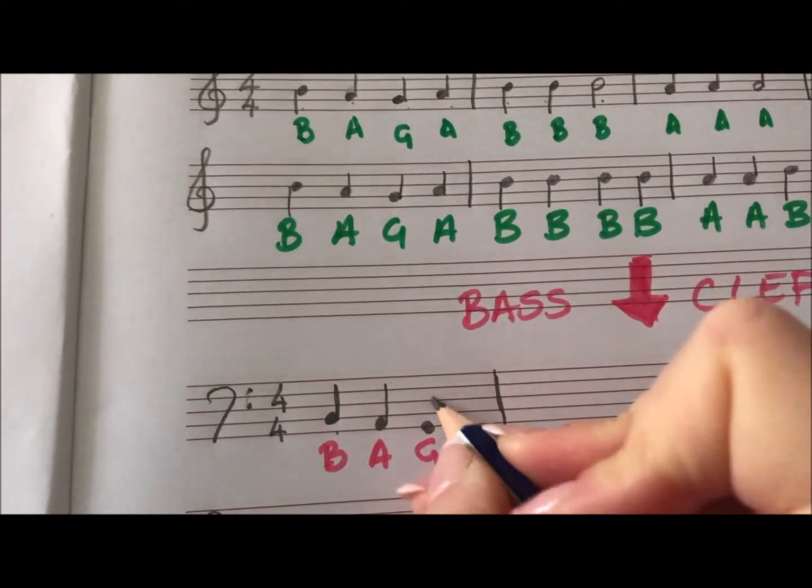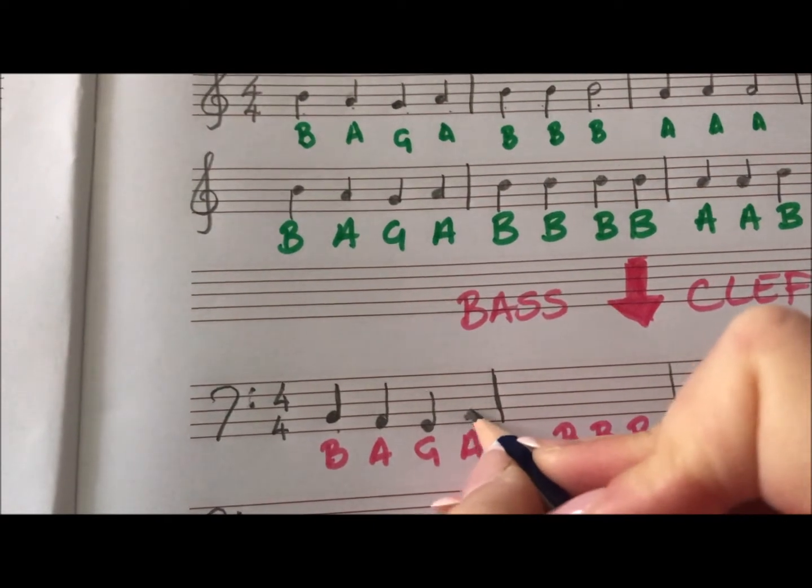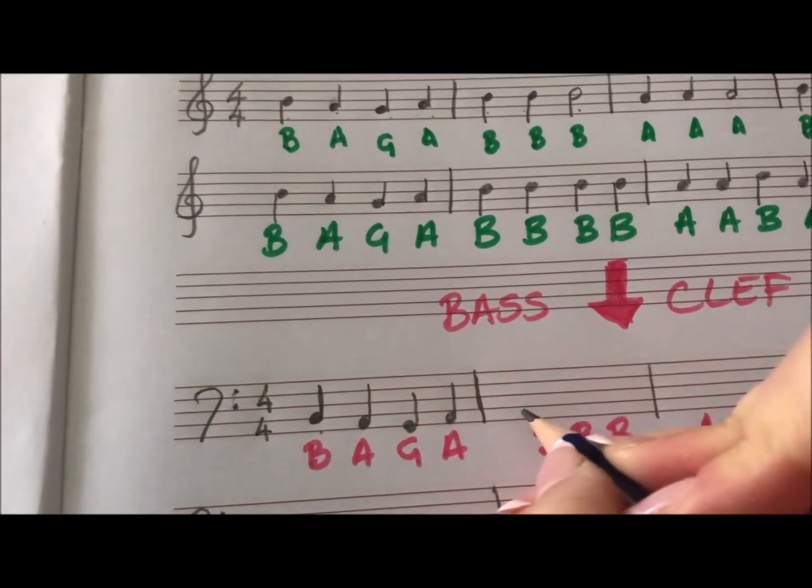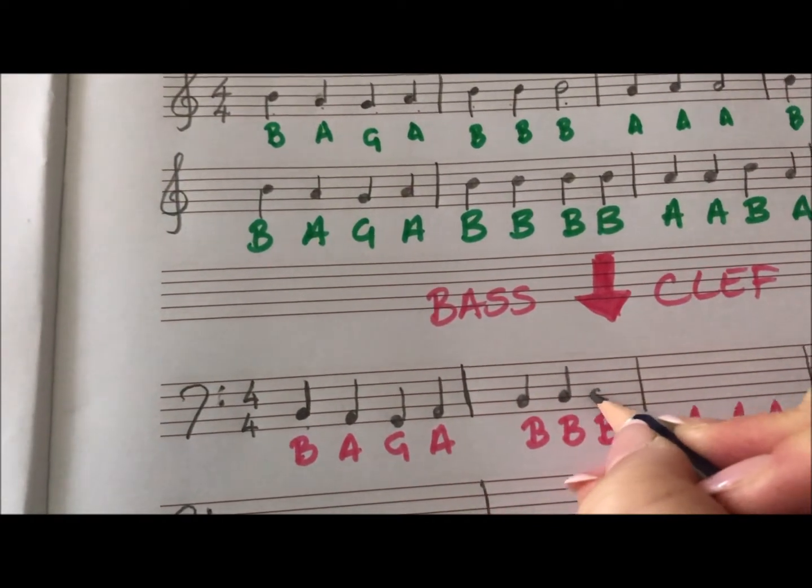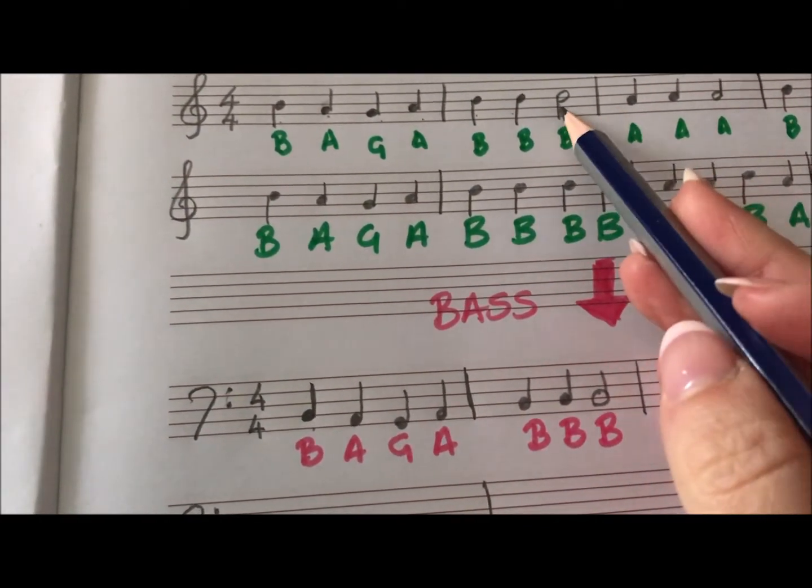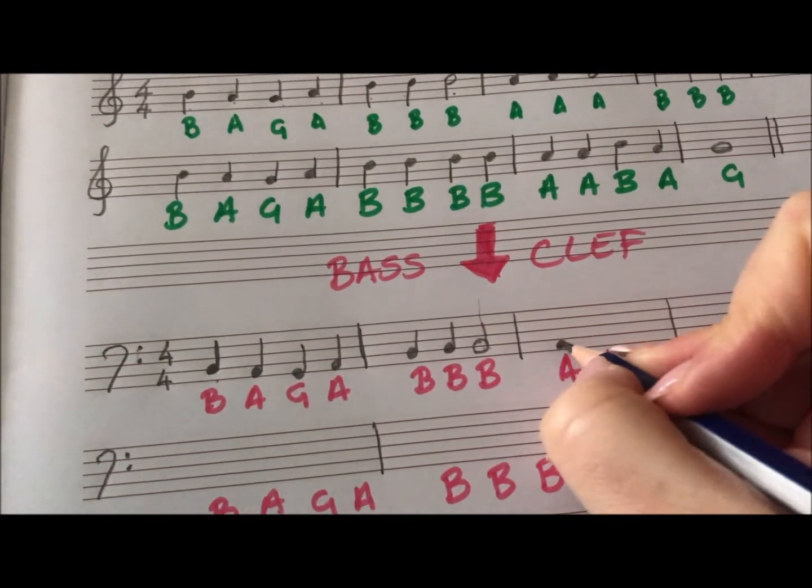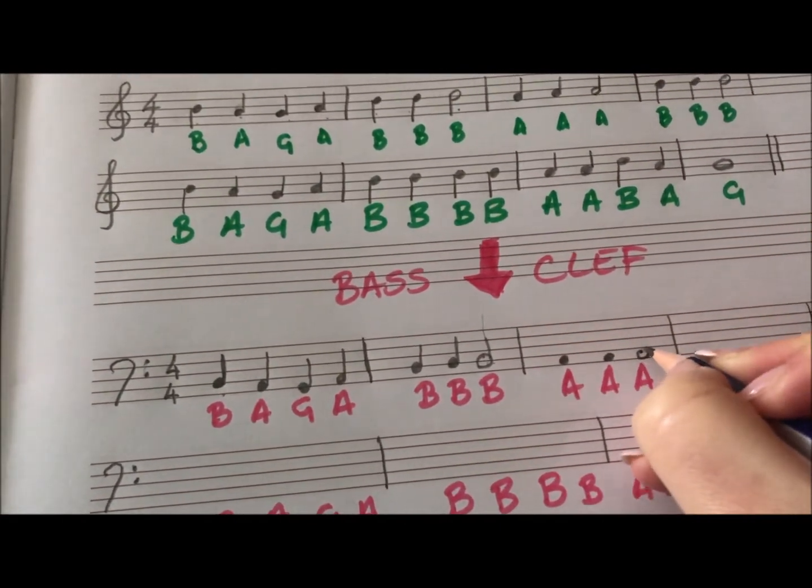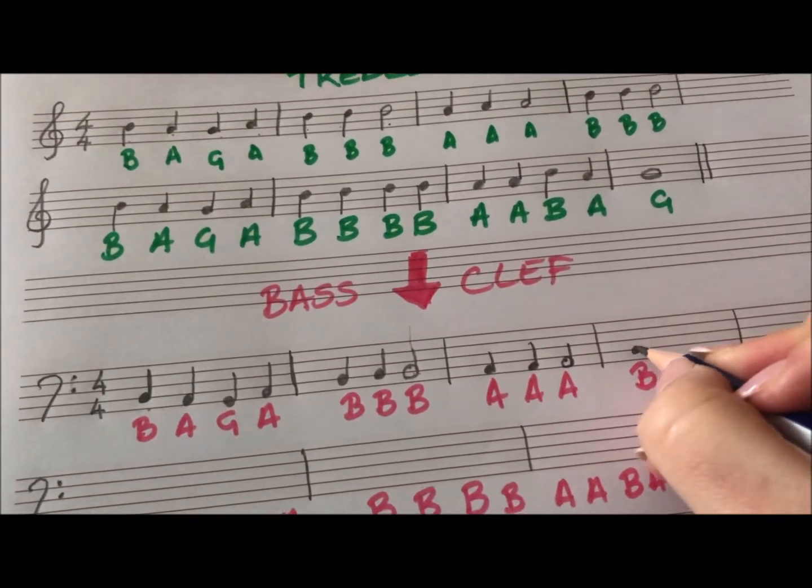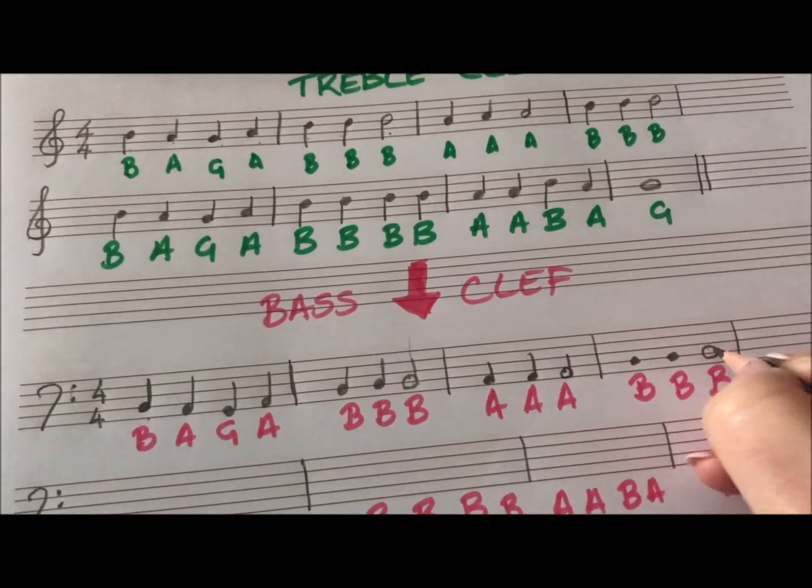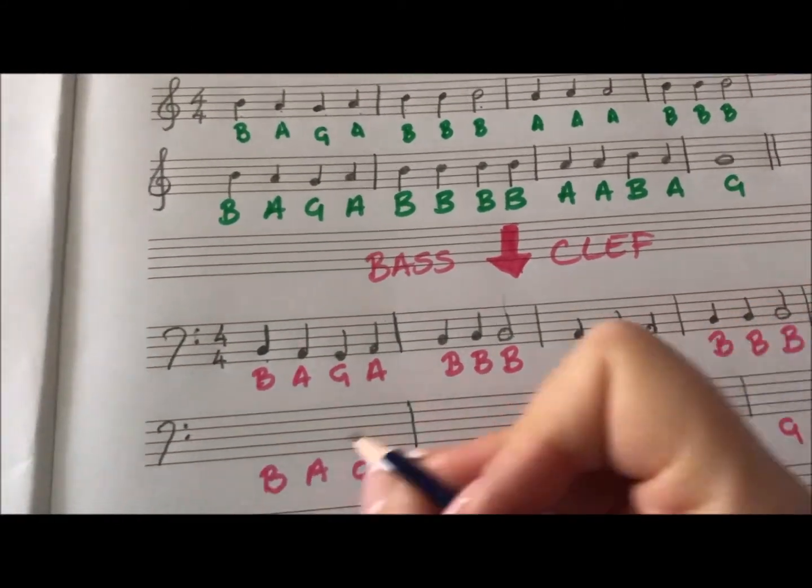So all for all cows eat grass, good boys deserve pineapples, all cows eat grass, good boys, and so on and so forth, noticing here how I'm actually keeping the melody and the rhythm the exact same. If there's a minim in the first part in the treble clef there, then it's going to be the exact same in the bass clef, so the rhythm is staying the exact same.